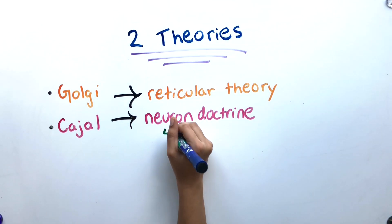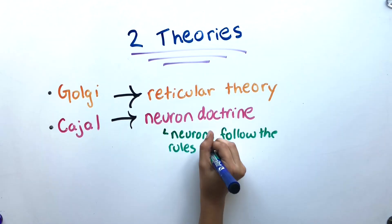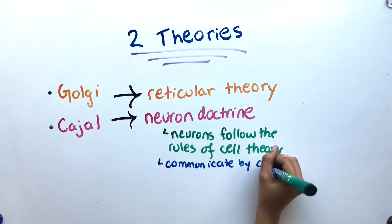Cajal, however, argued that the neurites of different neurons are not continuous with each other and communicate by contact, not continuity.